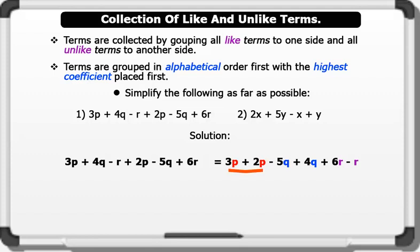3P plus 2P equals 5P, minus 5Q plus 4Q equals minus Q, plus 6R minus R equals plus 5R.